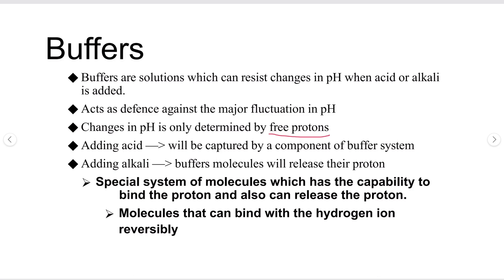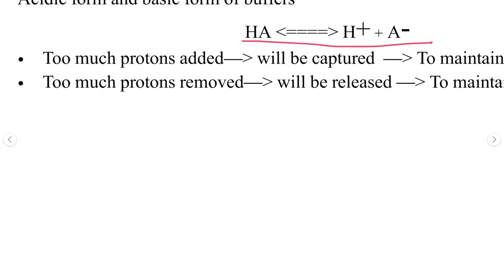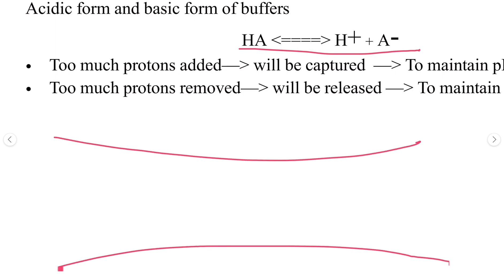Buffers are special molecules that can bind protons or release protons — molecules that can bind with hydrogen ions reversibly. In a buffer system, some molecules are free and some are loaded with protons. If too many protons are added, they are captured by the free buffer molecules and pH is stabilized. If protons are removed, the loaded buffer molecules release their protons to maintain pH.